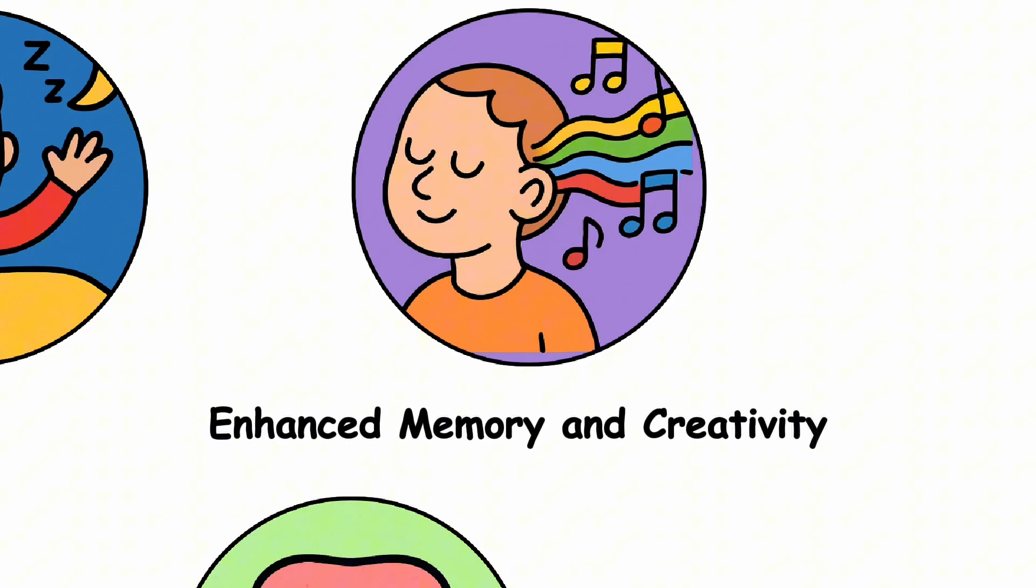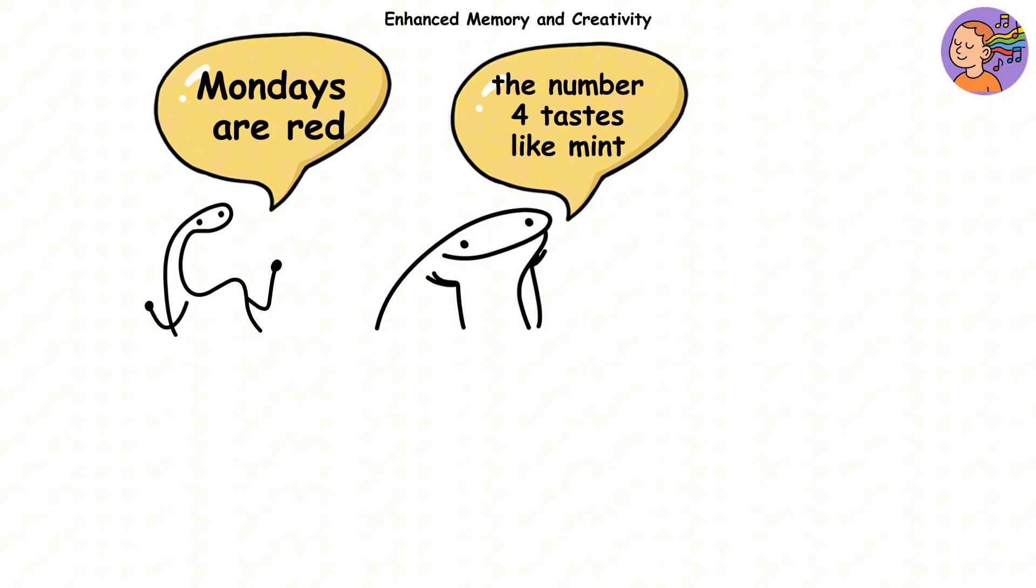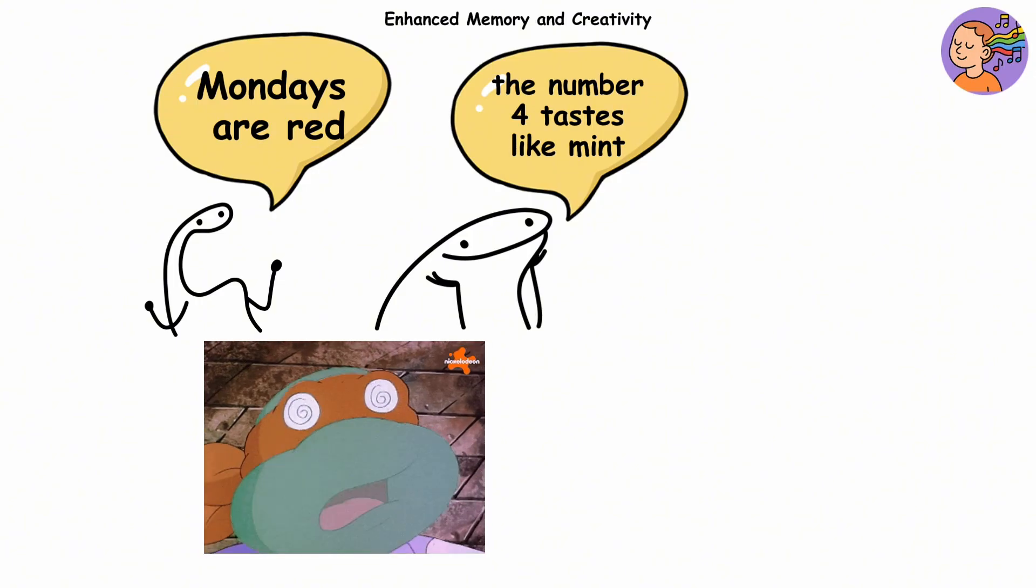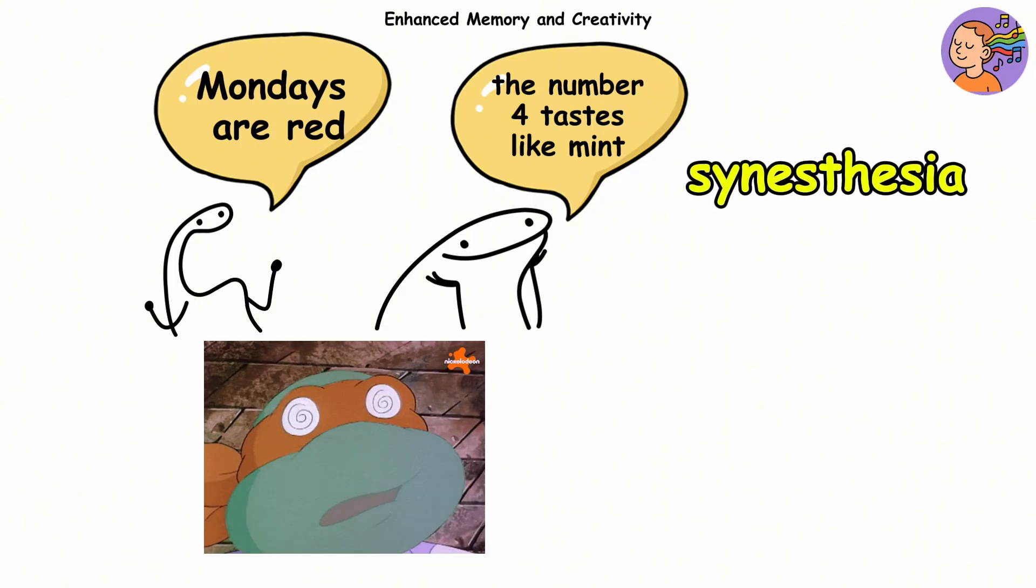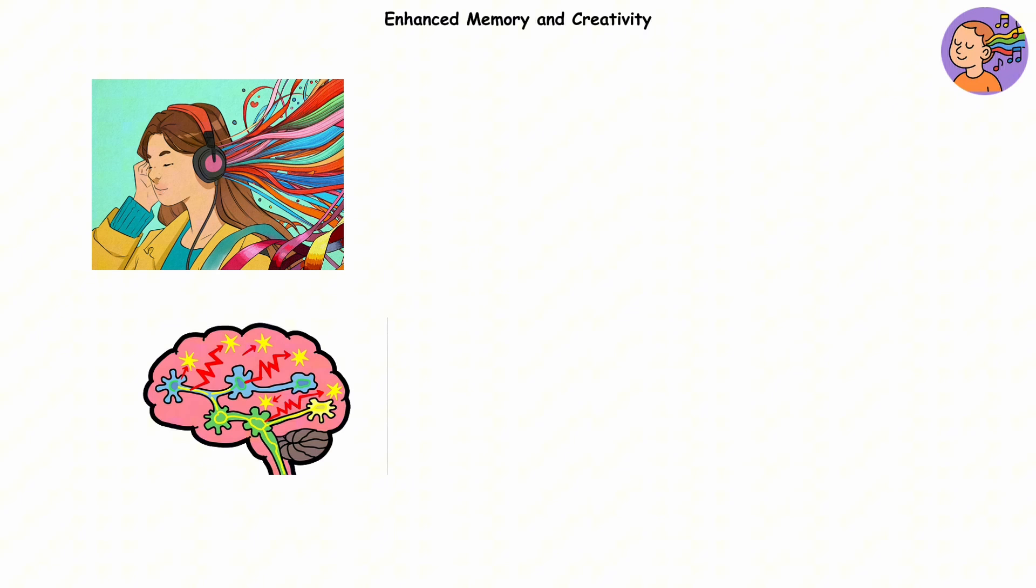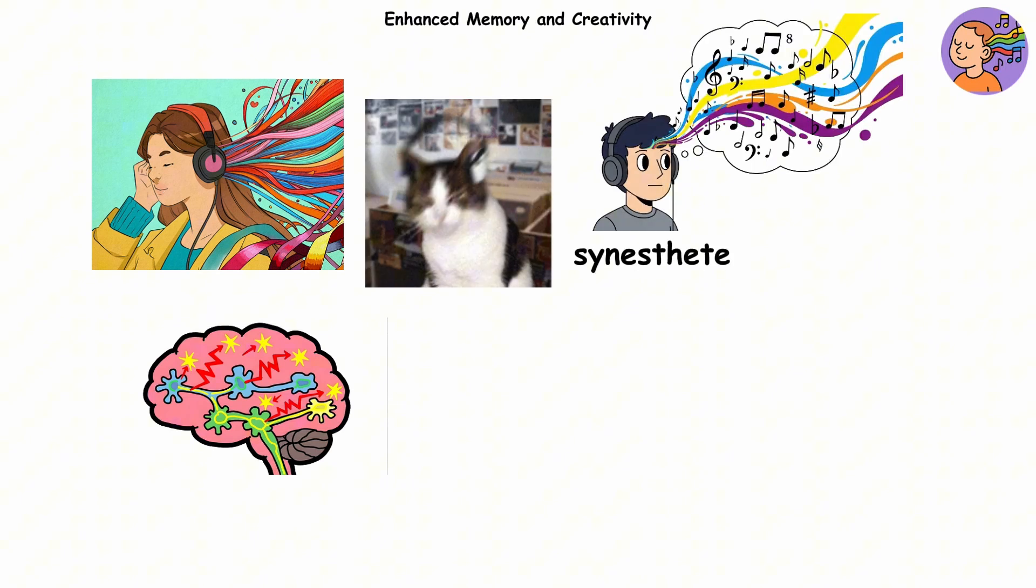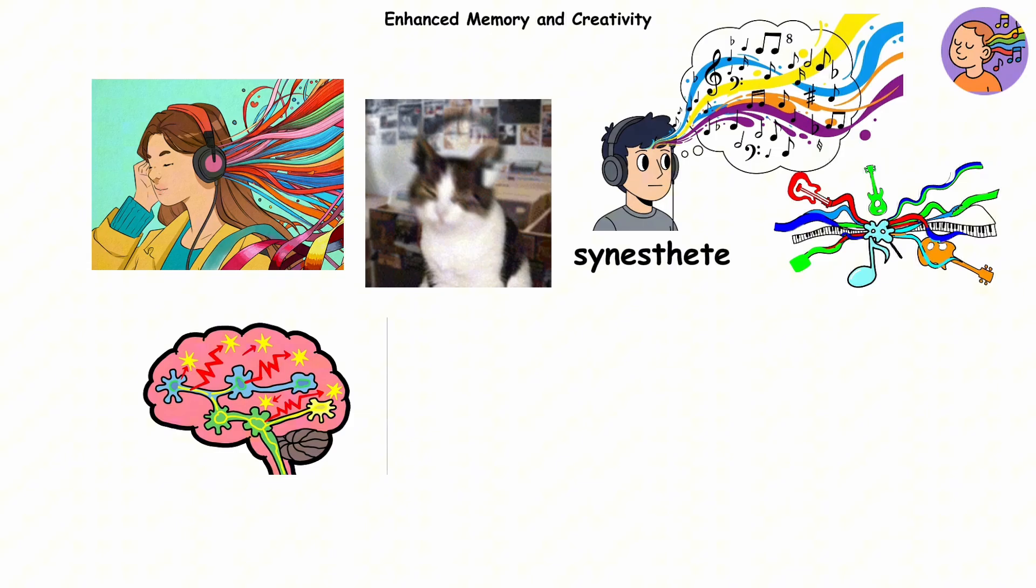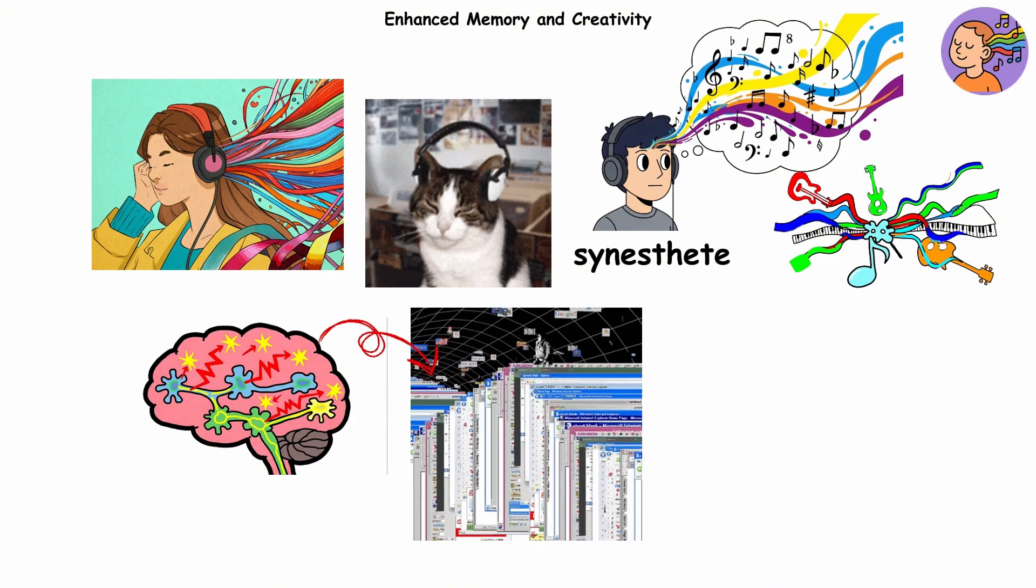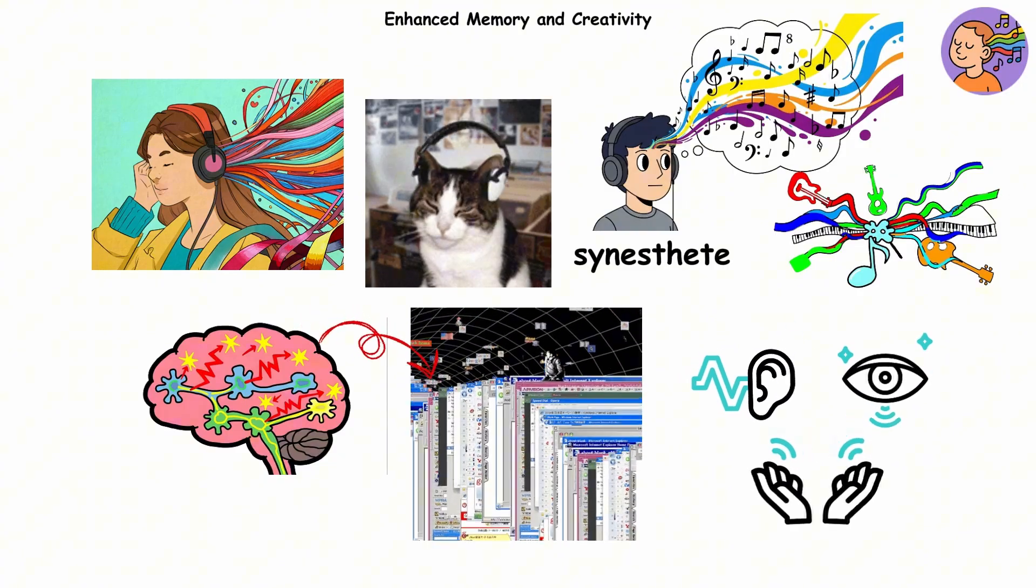Enhanced memory and creativity. Ever met someone who says things like, 'Mondays are red,' or 'the number four tastes like mint'? They might be hallucinating. Or they might actually have synesthesia, a brain quirk where the senses sync up in unexpected ways. In synesthesia, signals in the brain's sensory regions cross wires. When most people hear music, they just hear it. But a synesthete might see it too. Glowing colors, dancing with every note. It's like their brain accidentally left all the sensory tabs open at once, and now sound, sight, and touch are chatting in one big group text.